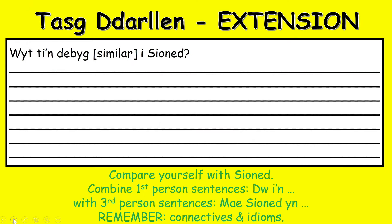Finally, moving on to the extension task. The question is: wyt ti'n debyg i Sioned? Are you similar to Sioned? We want you to be able to compare yourself with the girl Sioned, using a combination of first person sentences using dwi'n — for example, 'dwi'n debyg i Sioned achos' or 'dwi ddim yn debyg i Sioned achos'. Then support your answer with a third person sentence using 'mae Sioned yn'. Remember to use connectives and idioms also. You'll find task dau again with a small link under this video.